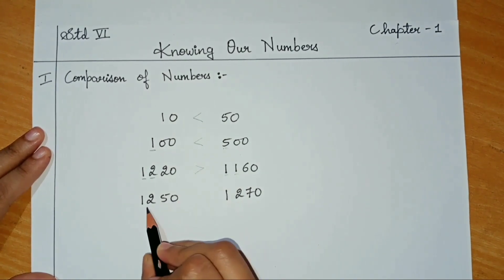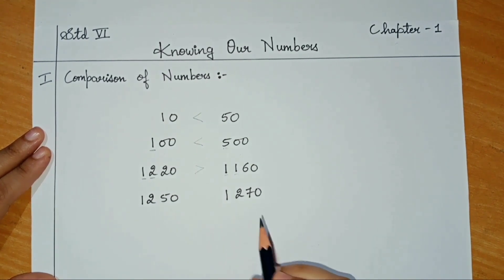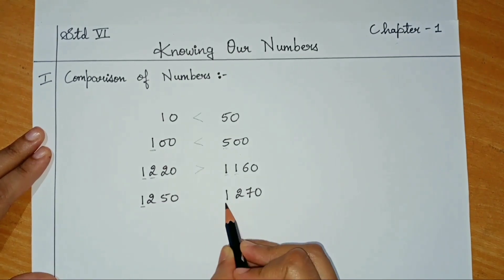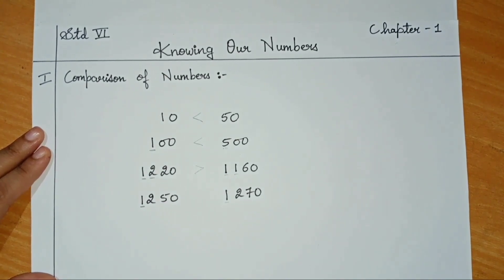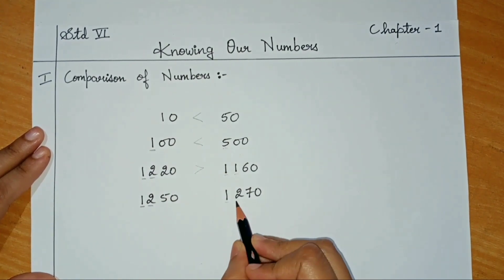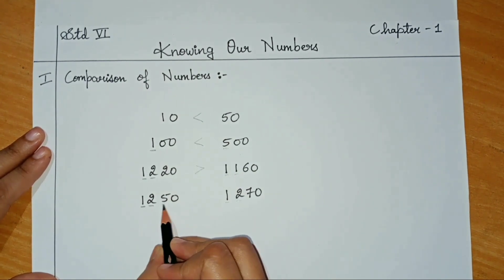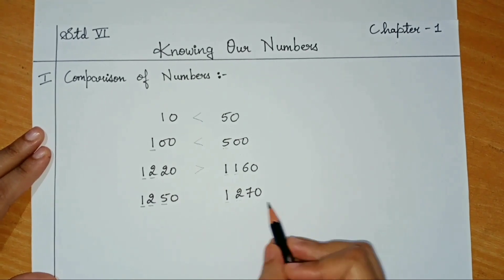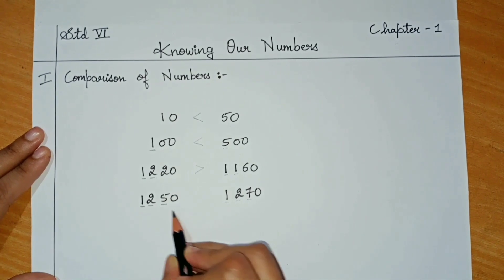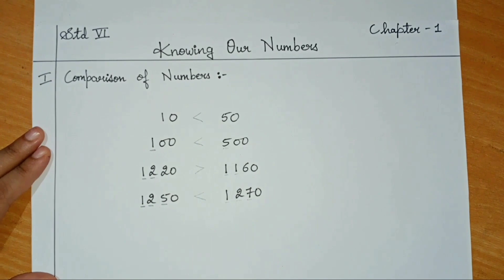Let us compare the numbers 1250 with 1270. Start comparing the first digits — here the first digit is 1 and even here the first digit is 1. Compare the second digit now: the second digit here is 2 and here also the second digit is 2. Now compare the third digit. Here the third digit is 5 and here the third digit is 7. Since 7 is greater than 5, we can say that 1270 is the greater number.